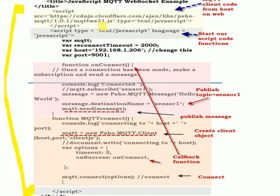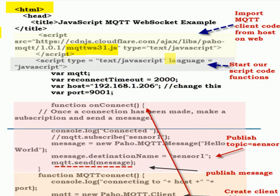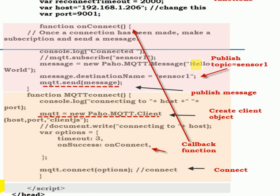It starts off with the call that brings in the MQTT client — you can see it here. I'm using the one on the web, which means I need an internet connection to pull in this client. If you haven't got an internet connection then you need to download the client and install it locally — it's just a simple file you copy into a directory and adjust the path to pick it up. The script then declares a few variables and consists of two functions: a connect function and an onConnect function.